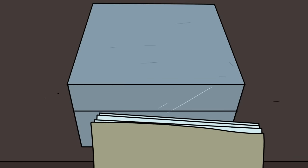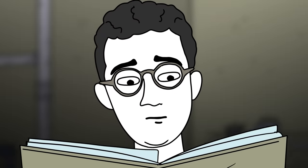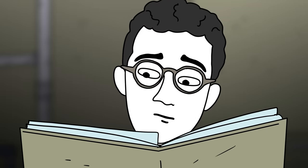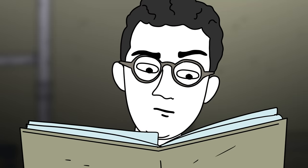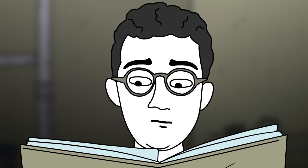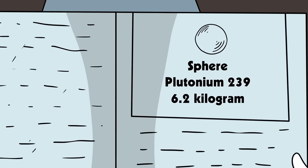The scientist looks over the folder that was given to him. There's nothing on the cover, so he opens it and starts looking inside, skimming over the long dry paragraphs that say nothing at all and seem to be included in every government report for some reason. Ah, there it is. Contents. One 6.2 kilogram sphere of plutonium-239.